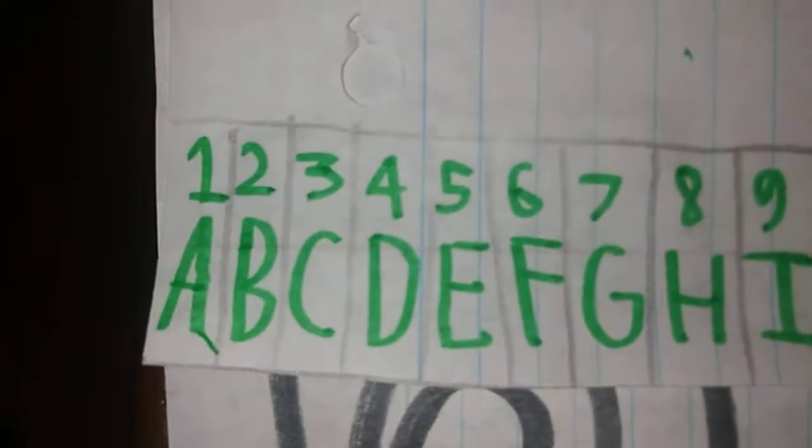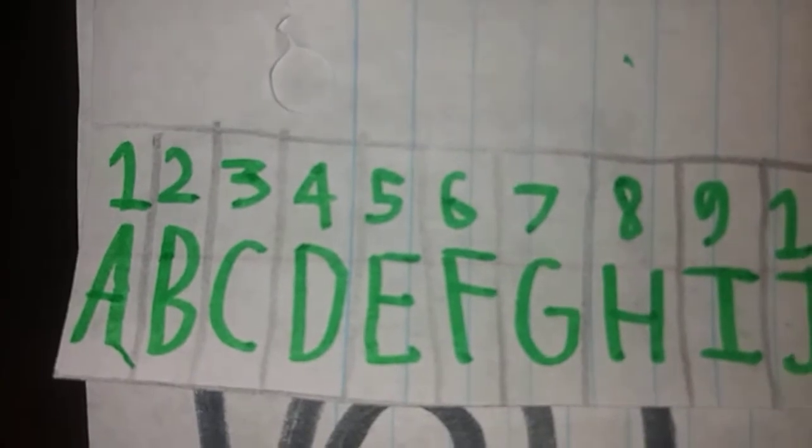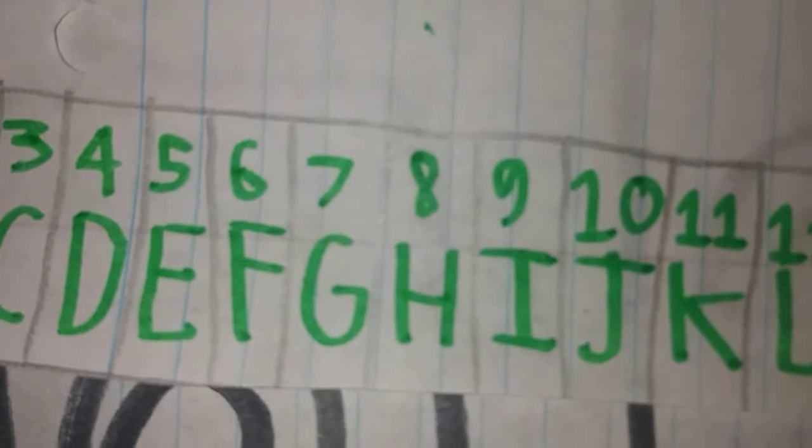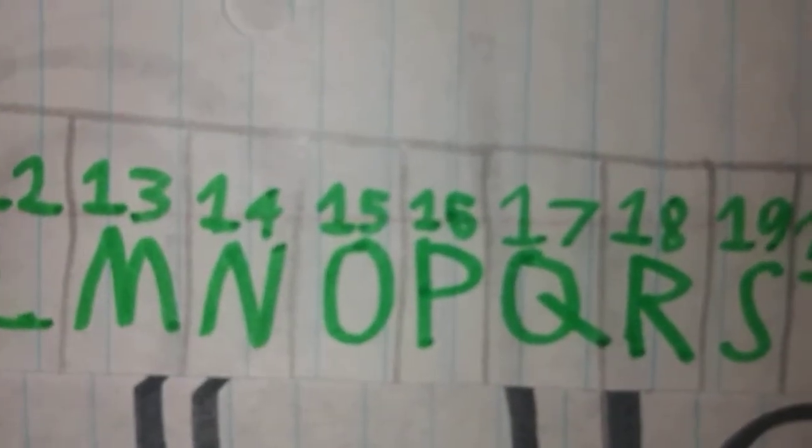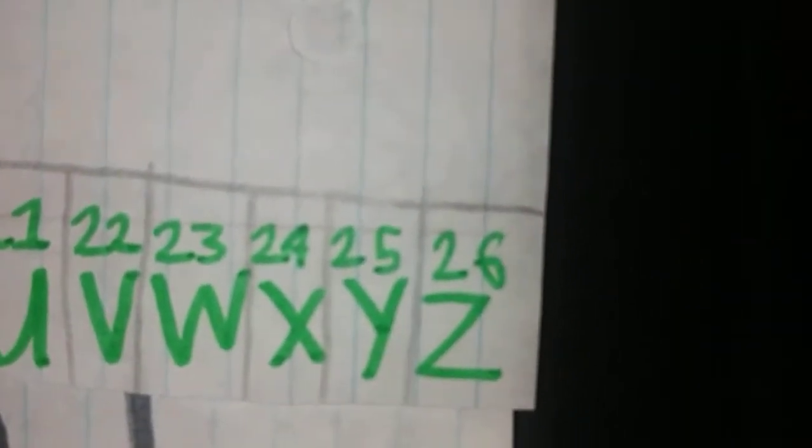So let me go all over again so you guys won't forget. He repeats the entire cipher from 1=A, 2=B, 3=C all the way through to 26=Z.